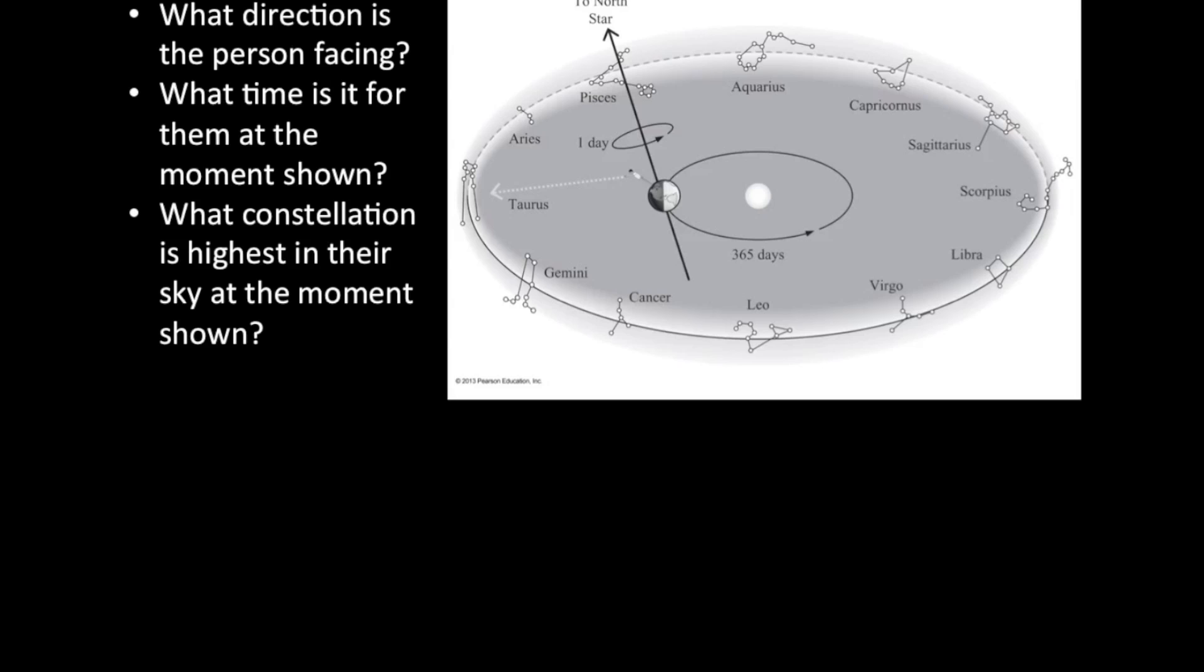The next question to ask is, what constellation is highest in their sky at the moment? Well, if we just follow the arrow, the dashed arrow pointing out to these stars, we find the constellation Taurus is the star pattern that is highest up above their southern horizon right now.